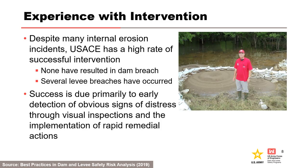Despite many internal erosion incidents, USACE has a high rate of successful intervention. None of these incidents have resulted in a dam breach, however several levee breaches have occurred. Success is primarily due to early detection of obvious signs of distress by visual inspections and rapid remedial actions. Rapid remedial actions have included drawdown of the reservoir, such as at Wister Dam and East Branch Dam, placement of sandbag rings around seepage exits, and placement of filter materials over seepage exits.